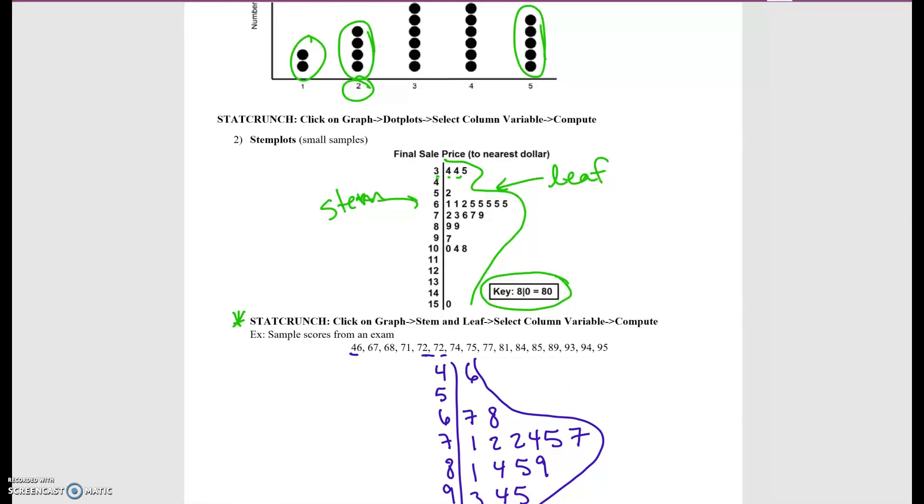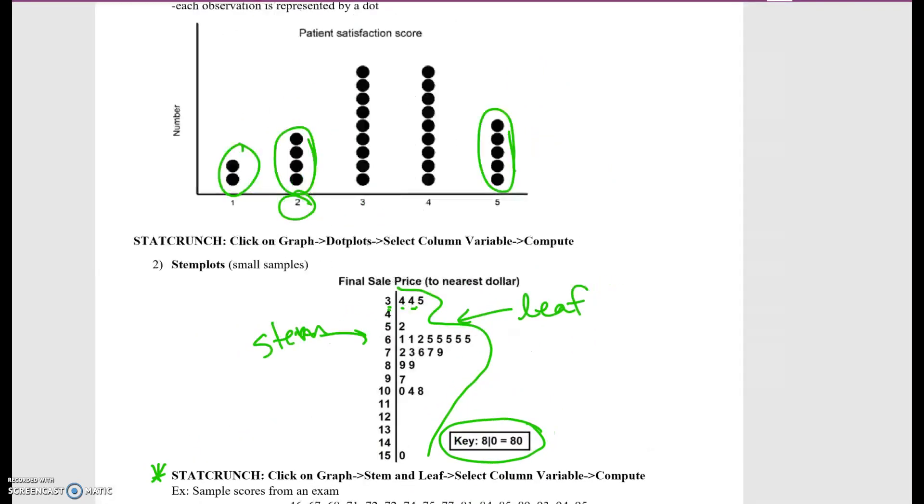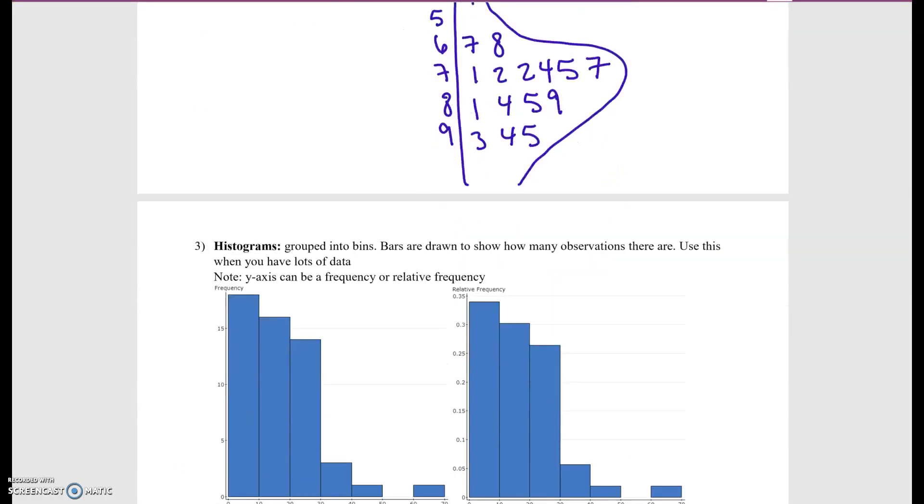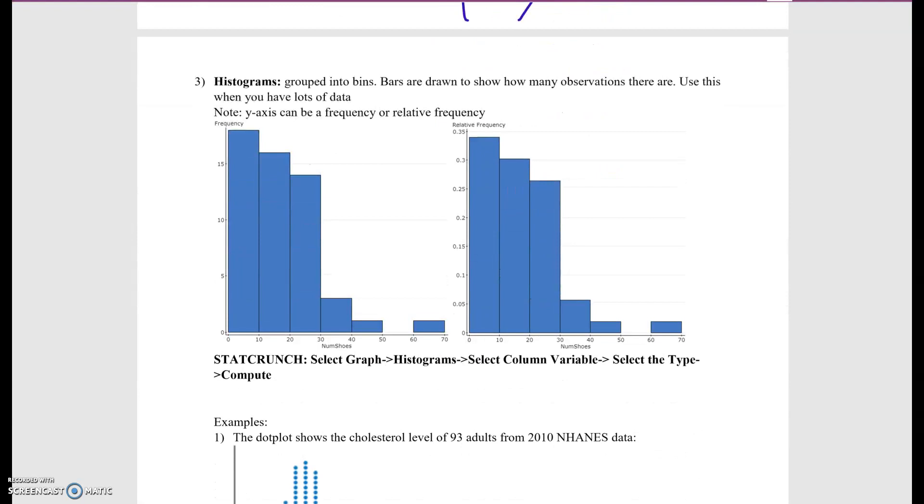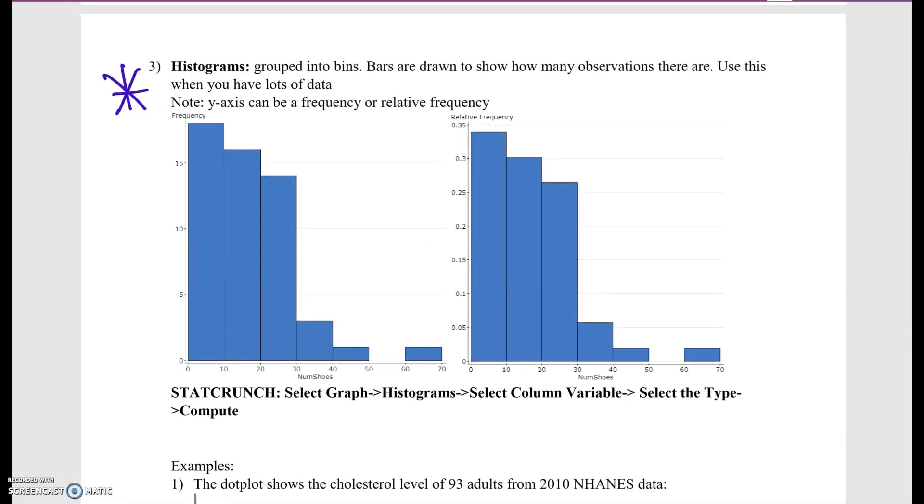Now these two plots are useful, but if you have a lot of unique values like height, you might not want to do those two things. What you want to do is a histogram. So a histogram is actually a very good plot. They're just grouped in bins. The bars are drawn to show how many observations there are. You want to use this when you have lots of data. They're really useful. It's very similar to the bar plot, but this is now for numerical data.